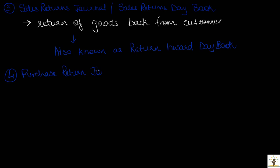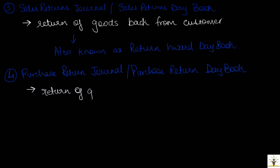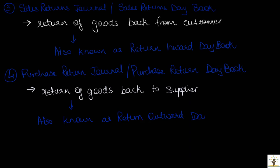The fourth book is the purchase returns journal or the purchase returns day book. This book is used to record transactions involving return of goods back to the supplier or creditor. Purchase returns is also known as return outwards in accounting because goods are going out of the business. Hence, the purchase returns day book is also known as the return outwards day book.